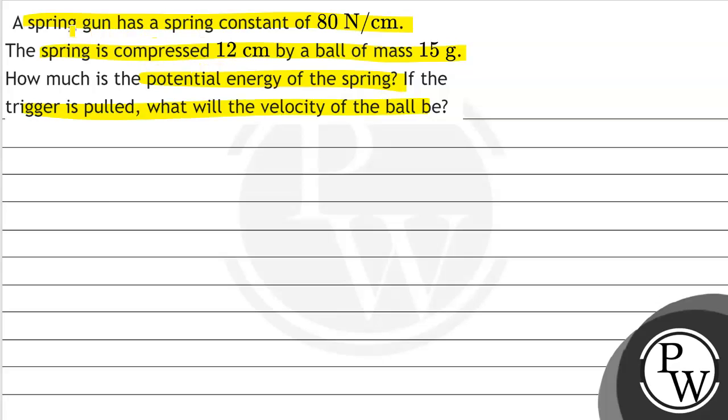So we have a spring gun which has a spring constant, and the spring is compressed to 12 centimeters and the mass of the ball is given. We need to find the potential energy of the spring and the velocity of the ball.